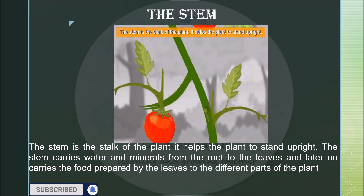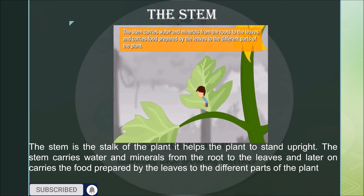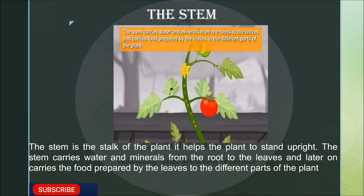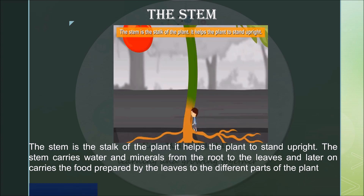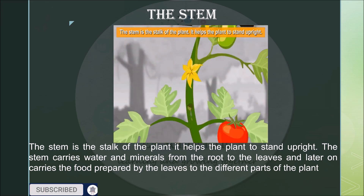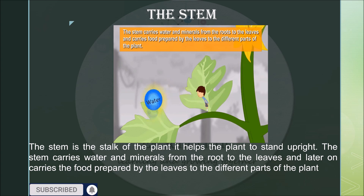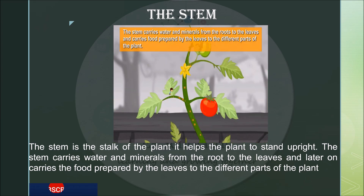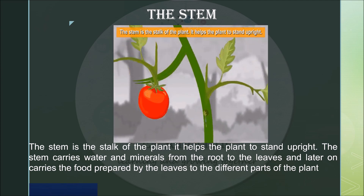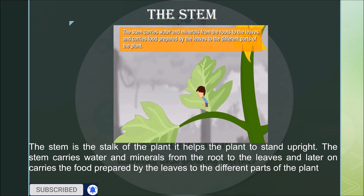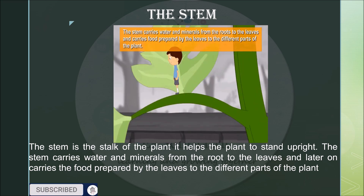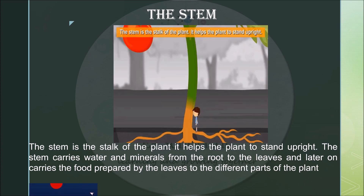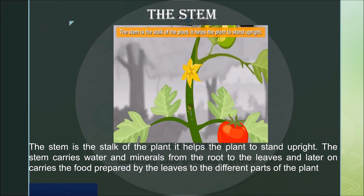Starting with the stem — what is the stem? The stem is the stalk of the plant. It helps the plant to stand upright. The stem carries water and minerals from the root to the leaves, and later carries the food prepared by the leaves to the different parts of the plant.